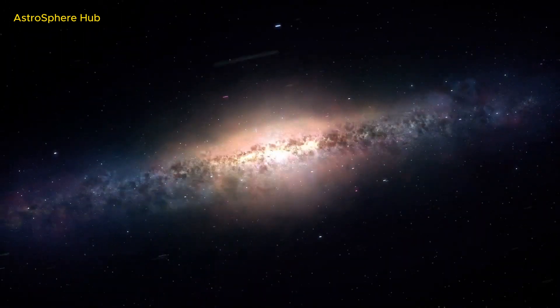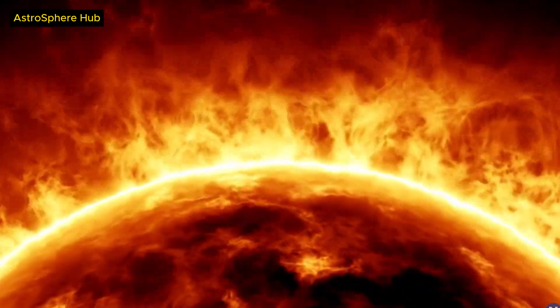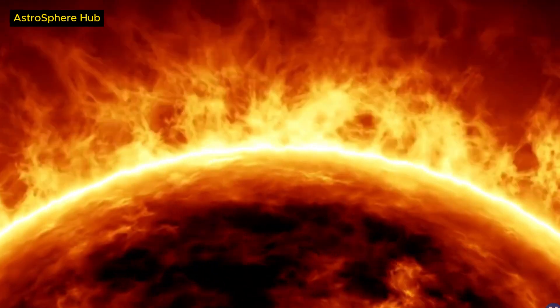It has a disk-like structure with two prominent spiral arms and a central bulge. It also has a blue color, which indicates that it is actively forming new stars.